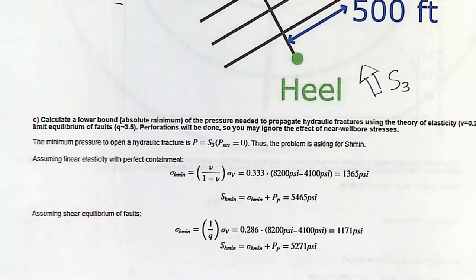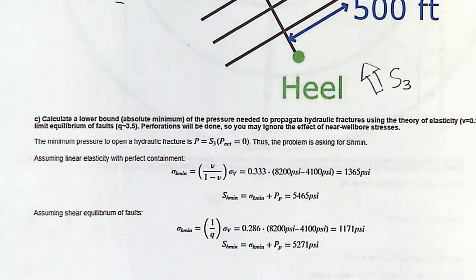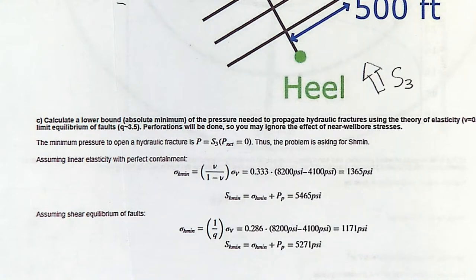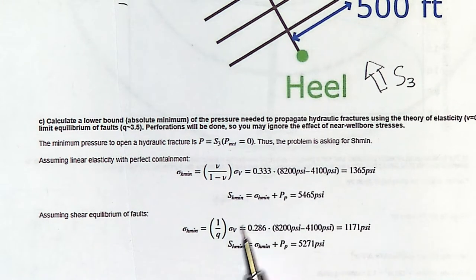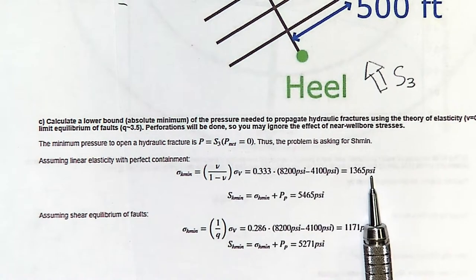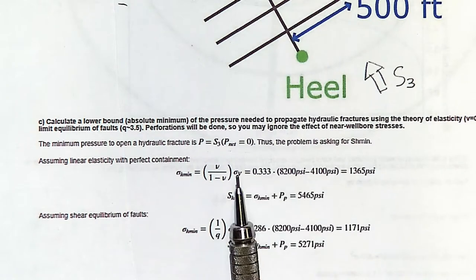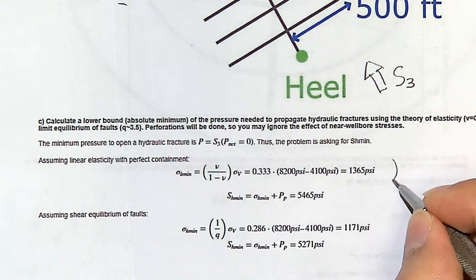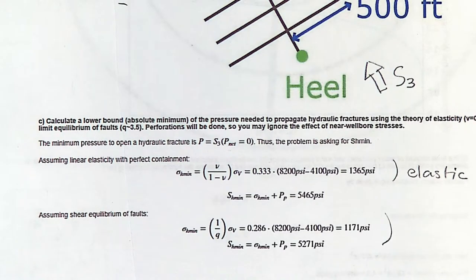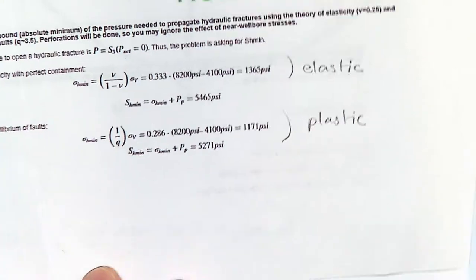With these equations you can estimate the minimum principal stress for a given depth. That's the minimum principal effective stress — add pore pressure to get the total, add a net pressure of a few hundred psi, and that's how much pressure your equipment needs for the hydraulic fracturing job. Remember: the first equation (elastic) assumes stress is proportional to strain — the rock is intact. The second equation (plastic, or equilibrium-of-faults approach) assumes the rock has already been broken.